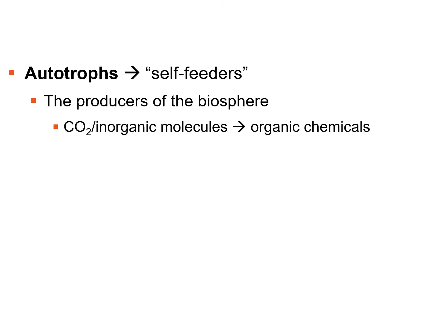Autotrophs use carbon dioxide — a gas that can't be used directly for energy and must be converted to chemical energy in a solid form. Some also use other inorganic molecules. What they do is take those gases and inorganic molecules and make organic chemicals from which energy can be extracted.